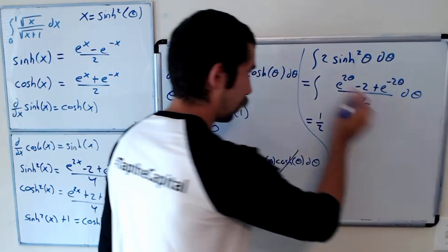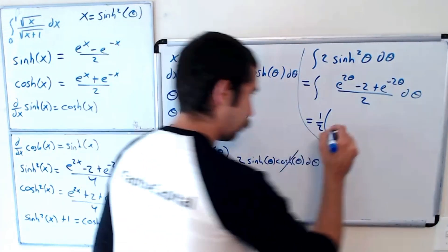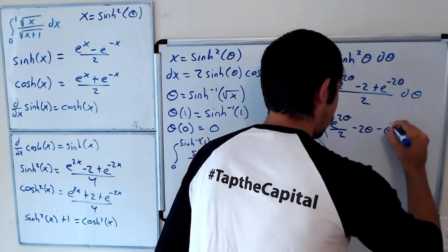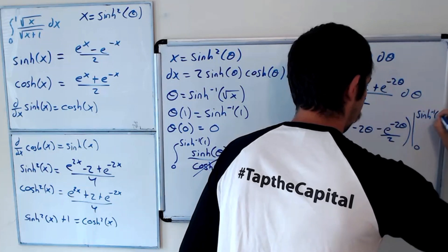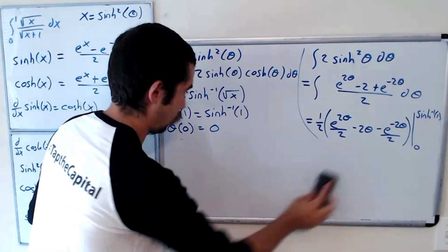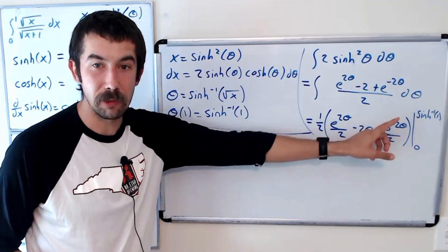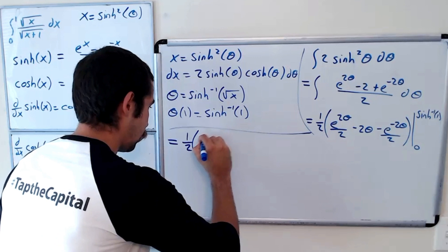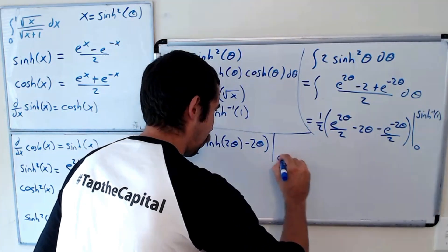This equals (1/2)[e^(2θ)/2 minus 2θ minus e^(-2θ)/2], evaluated from 0 to sinh⁻¹(1). Noticing that e^(2θ)/2 minus e^(-2θ)/2 is just sinh(2θ), this simplifies to (1/2)[sinh(2θ) minus 2θ] evaluated at the endpoints.